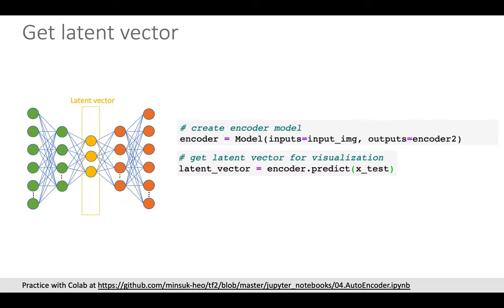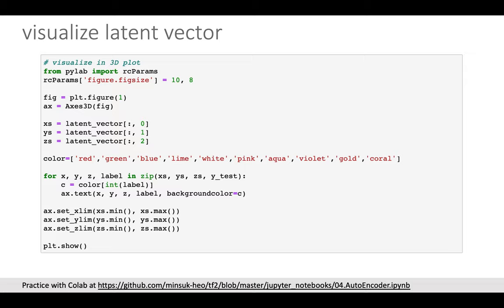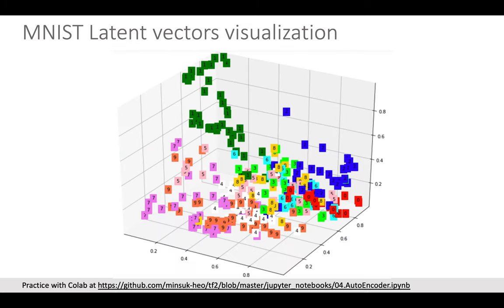We also want to plot latent vector. In order to get the latent vector, let's define the encoder as TensorFlow model using this code so we can get the output of the encoder. Now we can get the latent vector by getting encoder's predict API. Since now we have the three dimensional vector from the latent vector, we can easily plot using this code. You can verify same numbers are clustered in 3D chart after running this code.